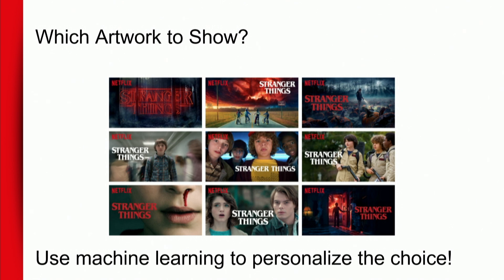Here are nine different box arts or images, and what we can do is use machine learning to personalize how we present Stranger Things to you. Perhaps we realize that you're into teenage or younger shows, so it's great to show you this image of two teenagers as the entry point into this show if you know nothing about it. Or if you like to watch scary horror movies, maybe we should show the image of this slightly creepy bleeding nose scene.